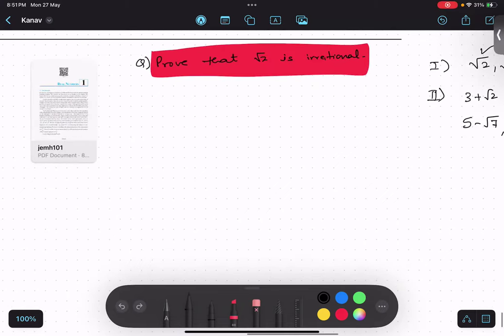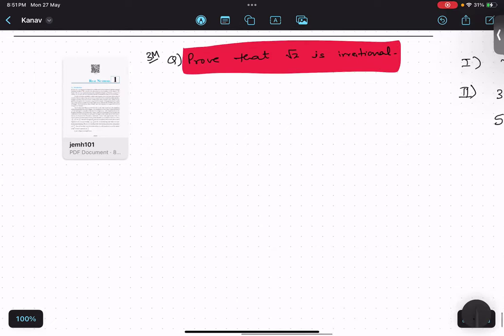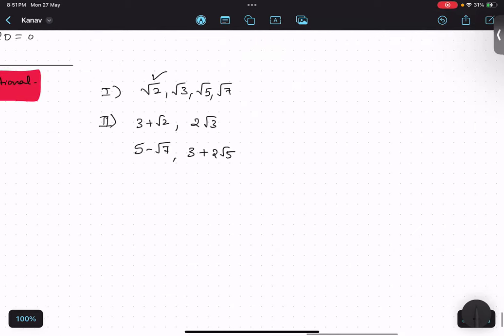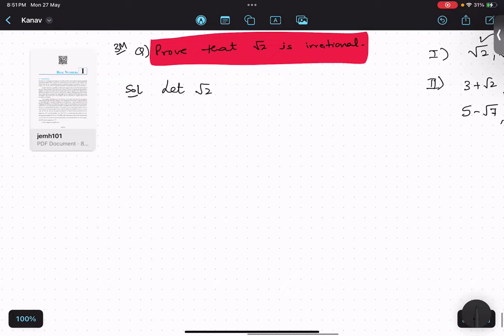Today whatever we are going to do is very important. This comes for minimum 3 marks directly. Many times it comes. So, prove that root 2 is irrational. Step number 1 is we have to take a contrary view. This is a contrarian view that I am taking, reverse of the question asked.